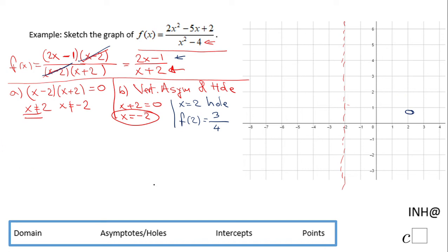Now I can move to horizontal asymptotes. We need to take a look at the degree of the numerator and denominator.